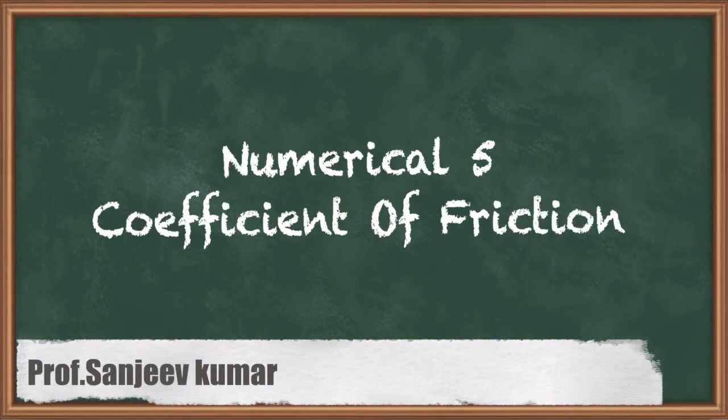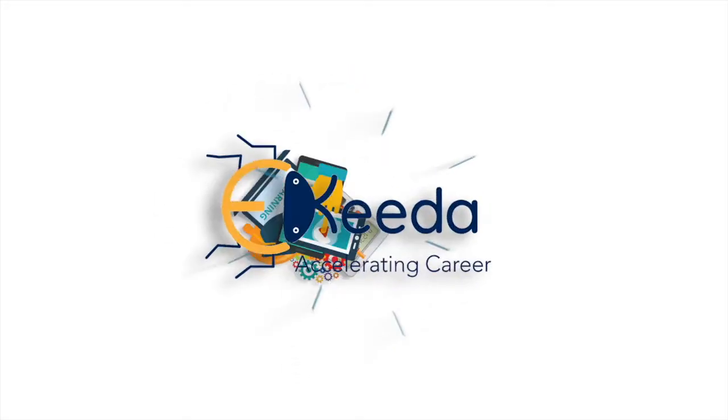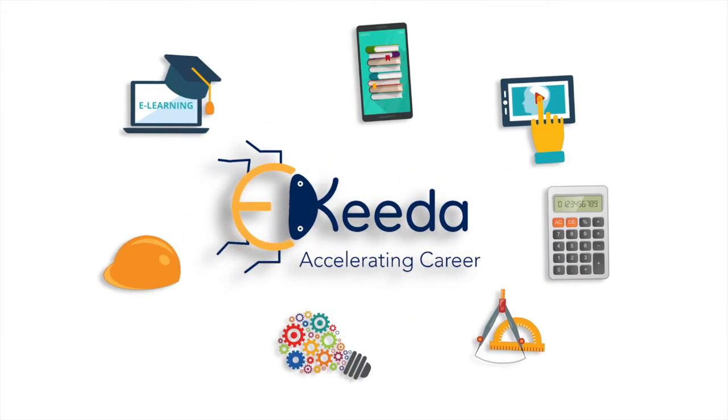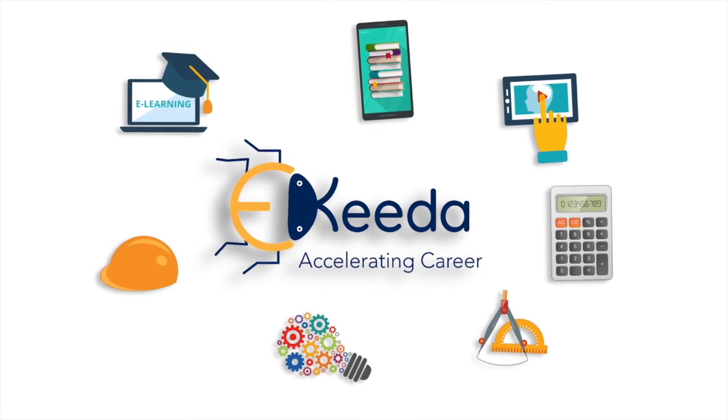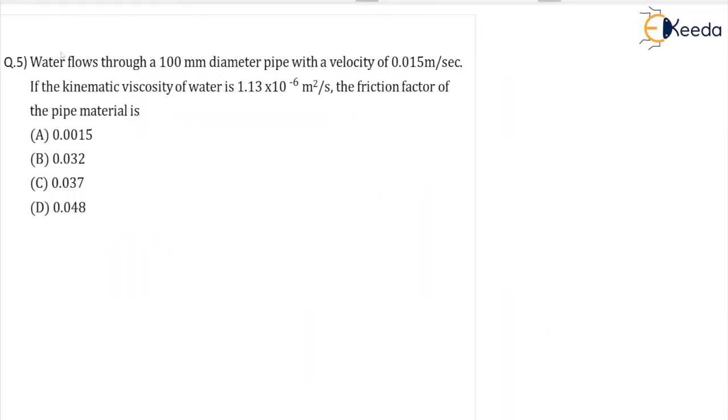Hello friends, in this video we are going to see a numerical problem on coefficient of friction. Water flows through a 100 mm diameter pipe with a velocity of 0.015 meters per second.